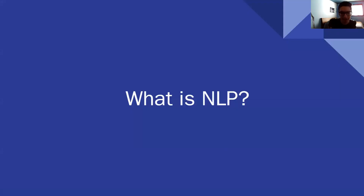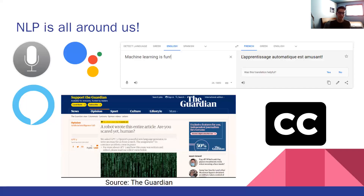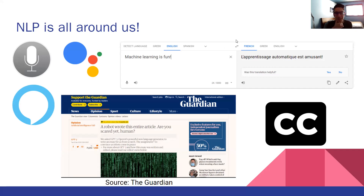I should start by answering the simple question: what exactly is natural language processing? Before I do that, I think it's good to take a look at what NLP is capable of. There are plenty of examples already in our daily life — we see it in the form of virtual assistants like Siri, Google Assistant, or Amazon's Alexa, or with Google Translate, which I found particularly useful throughout high school when I was taking French classes.